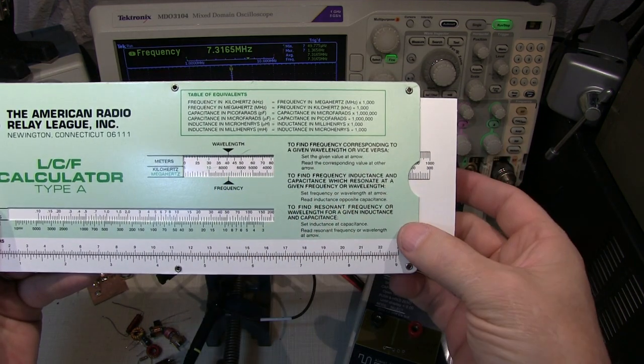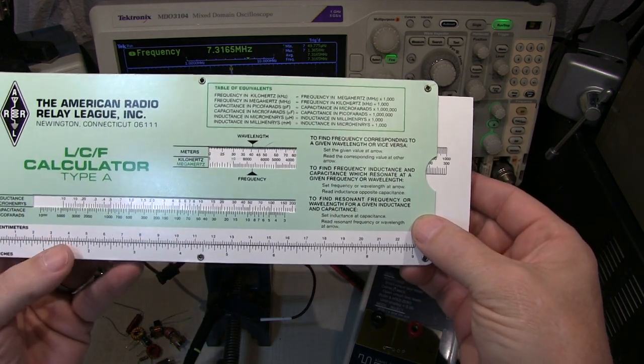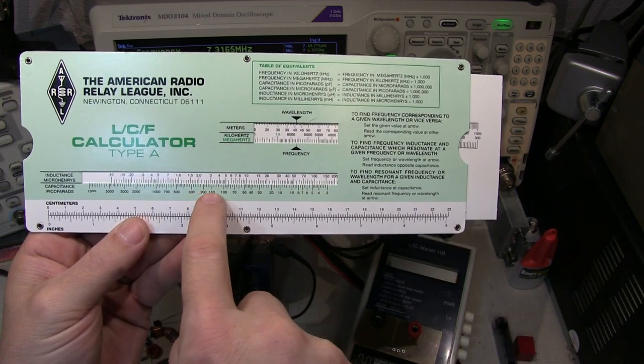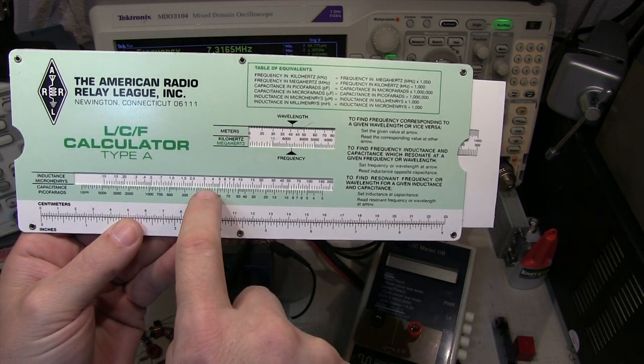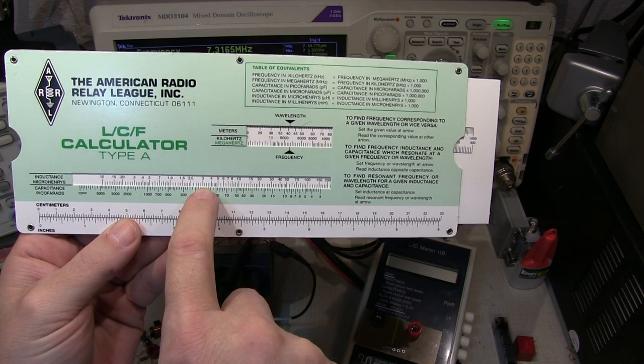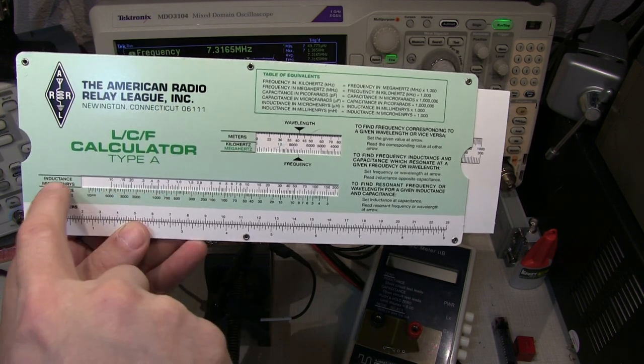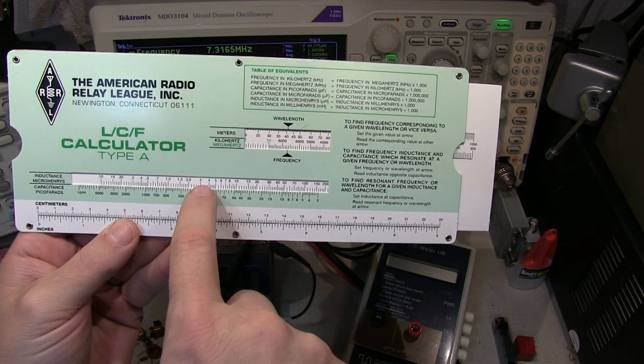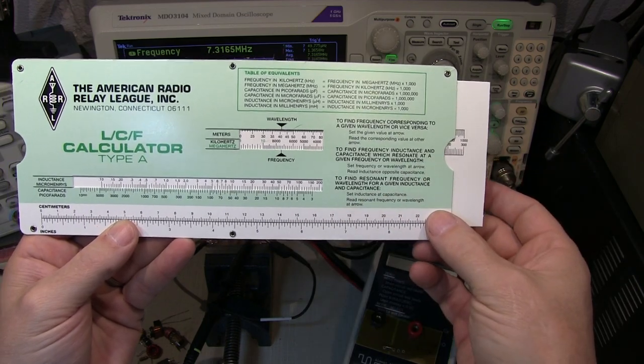There's 7.3 megahertz on the frequency chart. And we go down here and look along, there's 150 picofarads. And this is showing me just a little bit less than 3.2 microhenries of inductance. So let's go verify that on the LC meter.